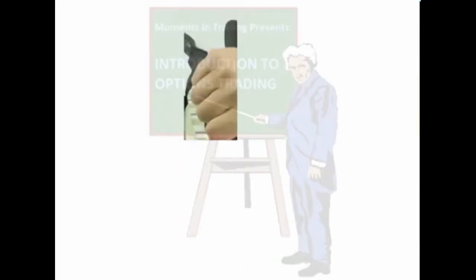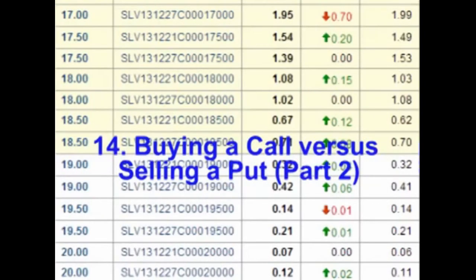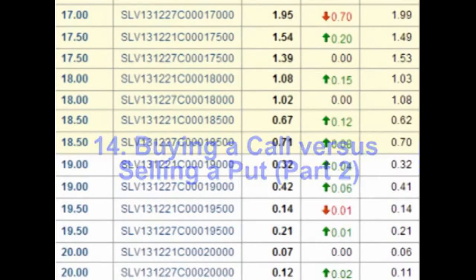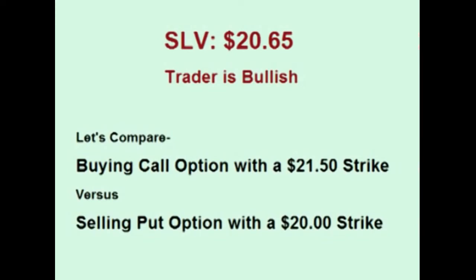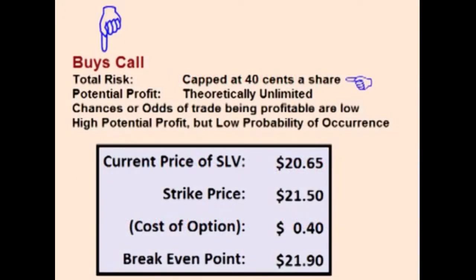In the next video we will compare buying a call option to selling a put option. Let's compare buying a call option to selling a put option using SLV, the silver ETF, as an example. At the time of making this video, SLV is currently trading for $20.65 a share. Let's compare buying the $21.50 call to selling the $20 put. If the trader buys the $21.50 call option, his total risk is 40 cents a share and his possible profit is unlimited, as theoretically the price of SLV can climb to any price. However, for the trade to be profitable, the price of SLV has to move above $21.90 within the next month. This trader is hoping that the volatility over the next month is enough that price moves above $21.90 faster than the time runs out for the option.